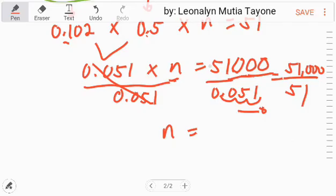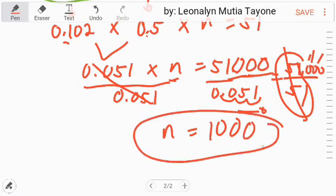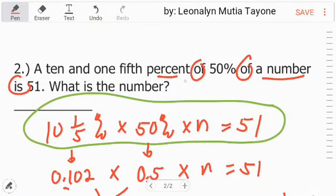So it becomes 51,000 divided by 51. In other words, 51 divided by 0.051 is the same as 51,000 divided by 51. This becomes 1, then copy the three zeros. So the equivalent of n is 1,000. The answer here is 1,000.